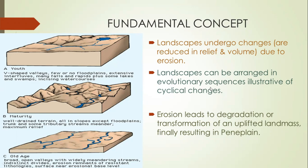The youth stage has a specific set of landscape features, maturity has its own set, and so on for the old stage. Erosion leads to the degradation of the uplifted landmass into a featureless plane called the peneplain. There is a clear reduction in relief progressing through these stages.